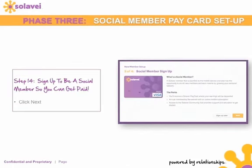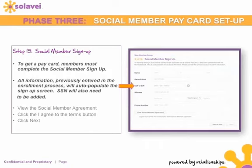Now we are in phase three, where you will set up your social member pay card. Simply click 'Next' on this page to indicate that you want to get paid with Solovey. Step fifteen is the social member sign-up. To get a pay card, members must complete the social member sign-up. All information previously entered will auto-populate in the sign-up screen, but you will need to enter your social security number to ensure you get paid. Then view the social member agreement, click 'I Agree,' and click 'Next.'